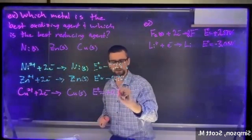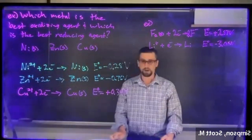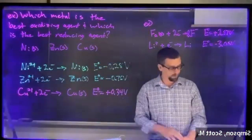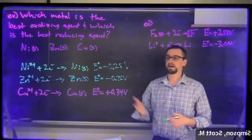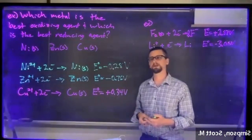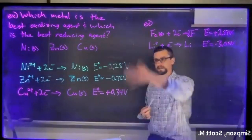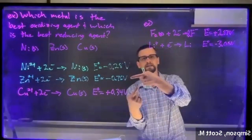Now we have the standard reduction potentials of each of these substances, and we have to look at them and decide which one is most likely to be oxidized, which one is most likely to be reduced. Given the signs of each of these and their magnitudes, we can say these are the max and min.